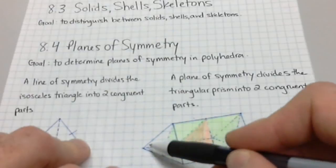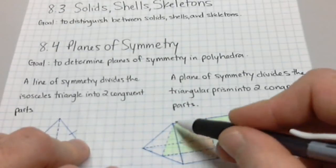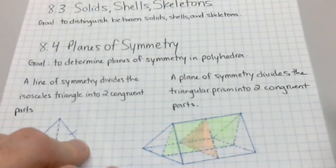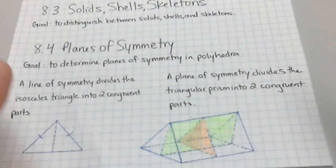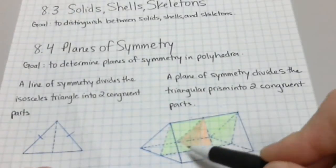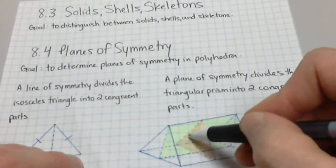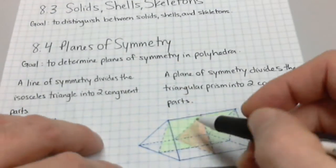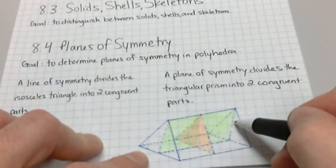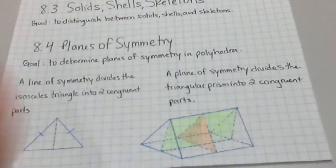I've drawn out a triangular prism, and I've actually drawn in two planes — a plane is just like a flat surface — that cut this shape into two. You can divide it along the orange triangle, and that will cut that shape in two like that. Or you can cut it along the green plane and split it up into two triangles that way.